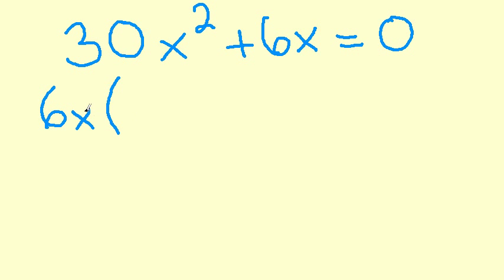Add a parenthesis and ask 6x times what gives us 30x squared and we end up with 5x. 6 times 5 is 30, x times x is x squared. Going to the next term, we keep the sign that's in front positive. 6x times 1 gives us 6x is all equal to 0.